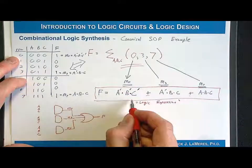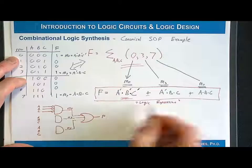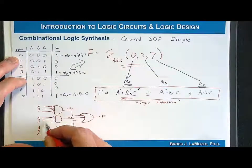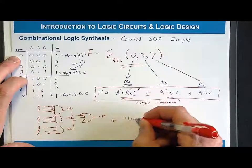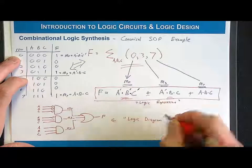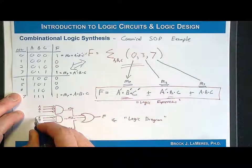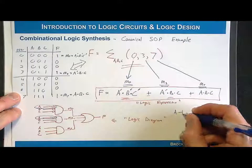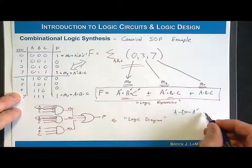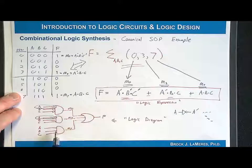Let's add inversion bubbles. For minterm 0, that's A', B', C'. For minterm 3, that's A', B, C. For minterm 7, that's A, B, C — no inversions. This is my logic diagram, and it's perfectly acceptable to draw it this way. You'll notice that A' appears in multiple places; in reality you'd have A go through one inverter to produce A', which is then shared by multiple minterms. But we can do that minimization later.